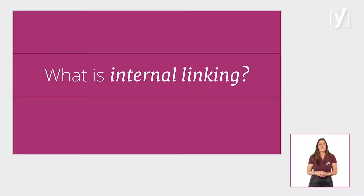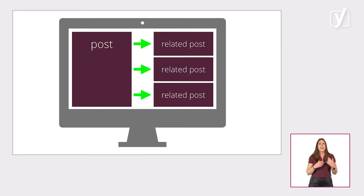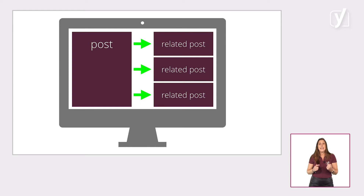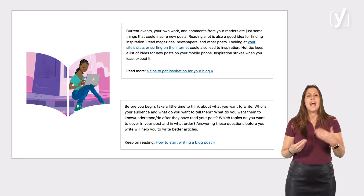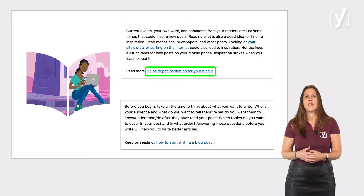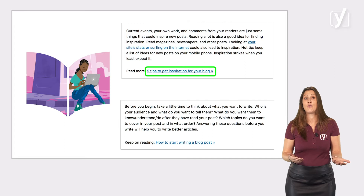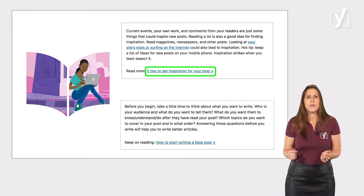So what is internal linking? Well, it basically comes down to this: it's about adding links from one post or page on your site to a related post or page on your site. By adding these internal links, you create routes that help visitors find other articles they might like. For example, on Yoast.com, we have a post called Blogging the Ultimate Guide, and in this post we link to related posts about blogging, such as '5 tips to get inspiration for your blog' or 'how to start writing a blog post.'